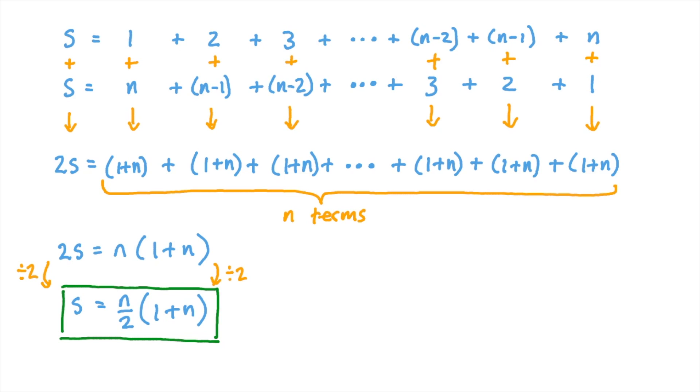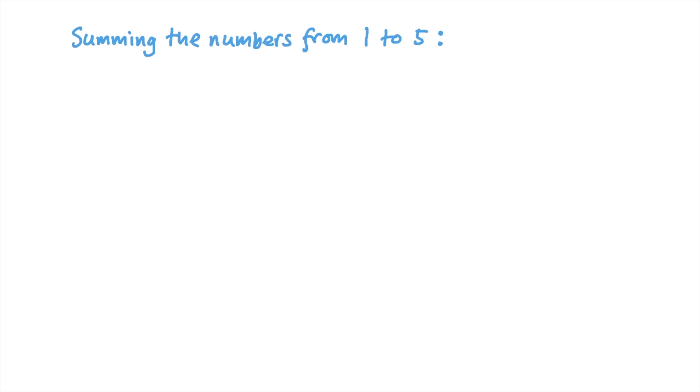But finally, let's try to visualize the problem in yet another different way by drawing out dots in a pattern. Let's just say we want to sum the numbers from 1 to 5. We can represent those numbers using rows of 1, then 2, then 3, then 4, then 5 dots. 1, 2, 3, 4, 5.